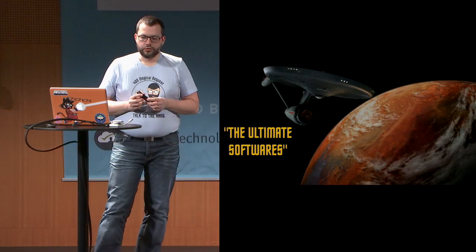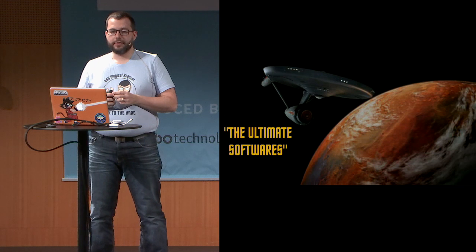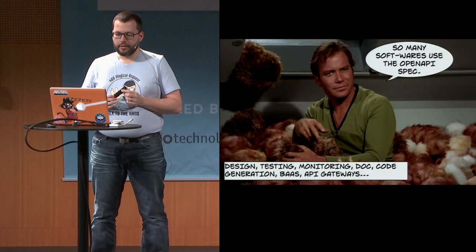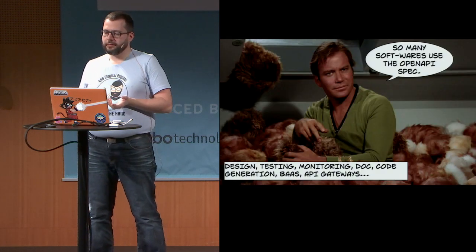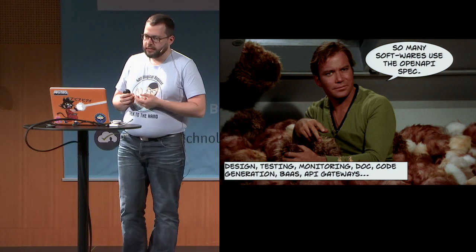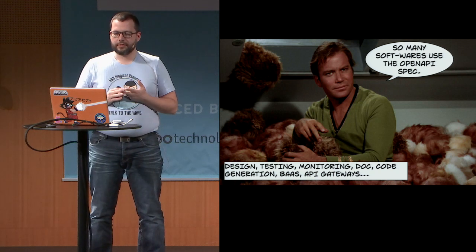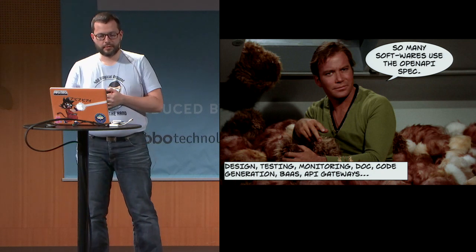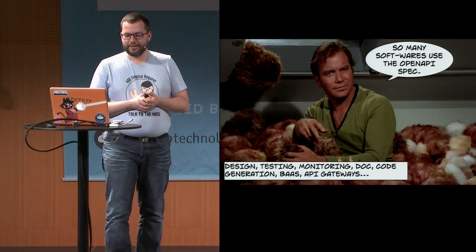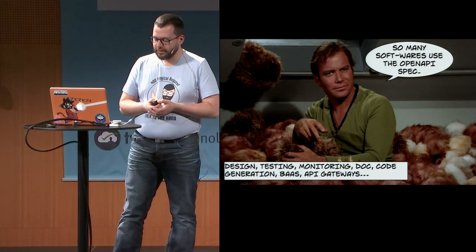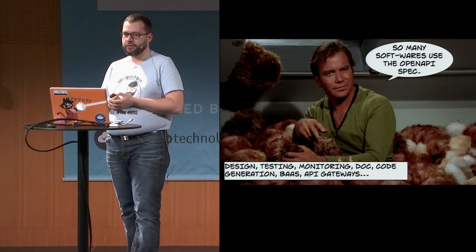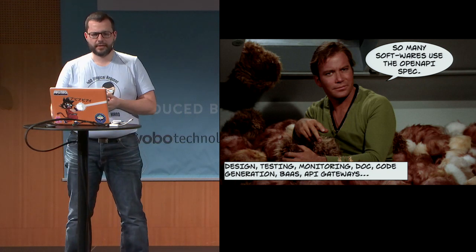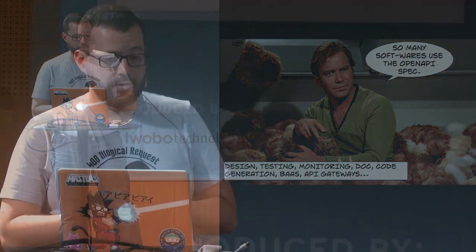Many open source and commercial tools support OpenAPI files, covering many different areas in the API universe. Design with Stoplight, SwaggerHub, Swagger Editor, REST United Studios. Testing with Postman, Paw, Dredd. Monitoring with Runscope. Documentation with Lucybot Console, RDOC, Redoc, SwaggerHub. Code generation with APIMatic, Swagger Inflector, Swagger Codegen. Backend as a service with Restlet, API Spark. API gateways like Apigee, Kong, or Amazon Web Services. I don't get any money when I say all that.